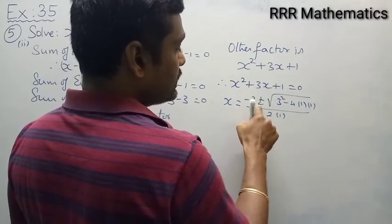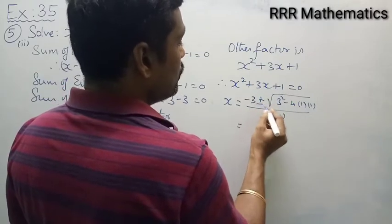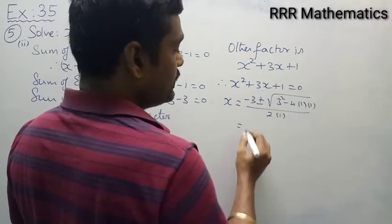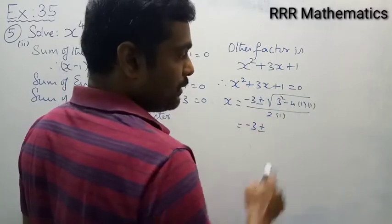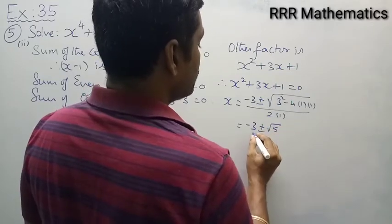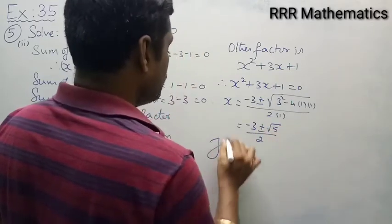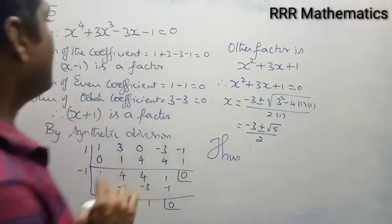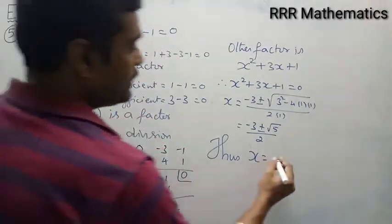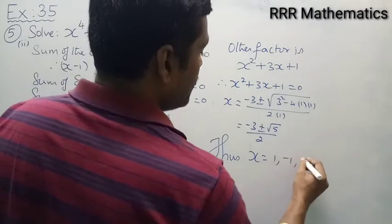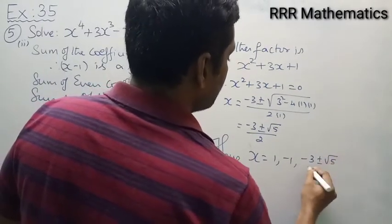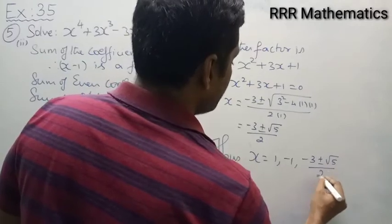Applying the formula: x = (-3 ± √(9 - 4)) / 2 = (-3 ± √5) / 2. So the remaining two roots are (-3 + √5) / 2 and (-3 - √5) / 2.